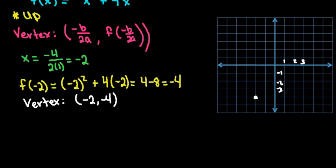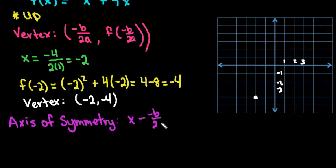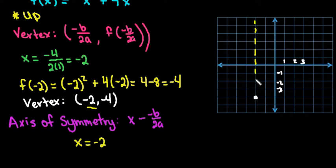If it asks for the axis of symmetry — a common question when graphing parabolas — remember that the axis of symmetry is the vertical line that goes through the x-coordinate of the vertex. It's x equals negative b over 2a. In this case, our axis of symmetry is x equals negative 2, the vertical line that goes through the vertex.